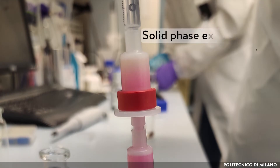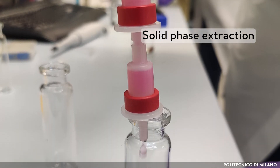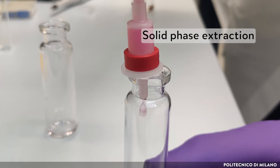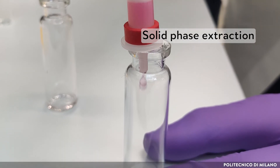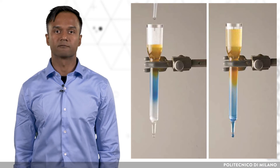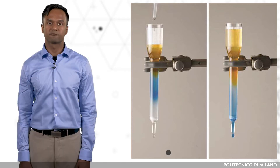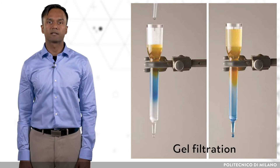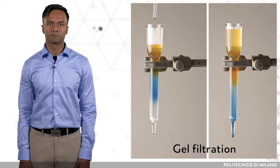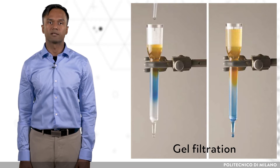Solid phase extraction purifies the molecules from a mixture based on their polarity. The desired product can be isolated by eluting with organic solvents. Gel filtration and centrifugal filtration separate components based on size. In gel filtration, the sample is passed through the stationary phase using gravity or air pressure. The smaller components get trapped in the cavities in the stationary phase, while larger molecules pass through.